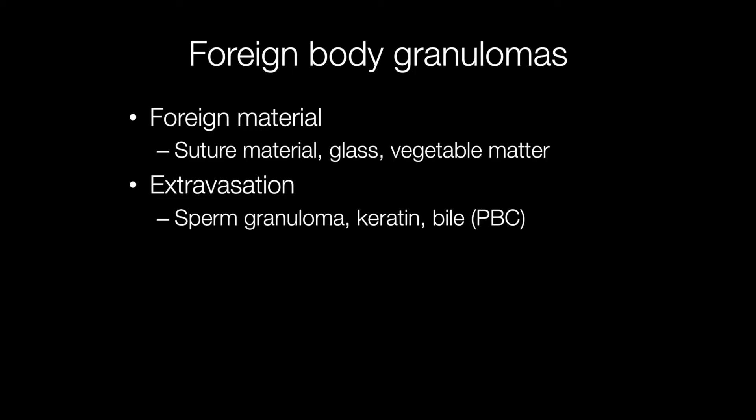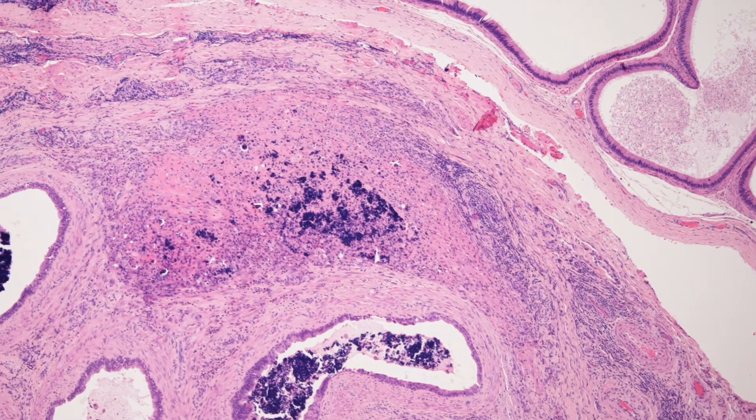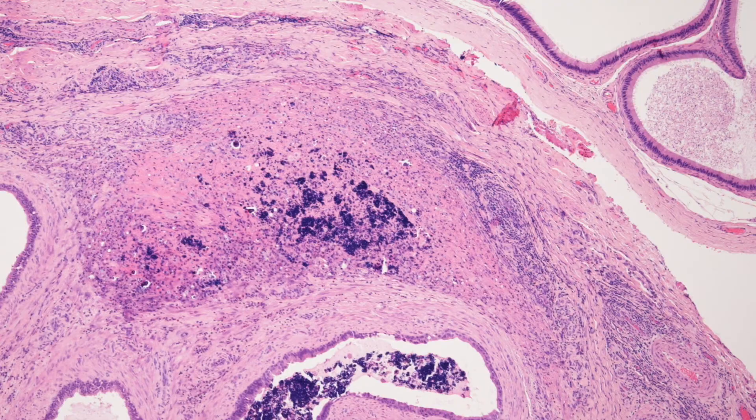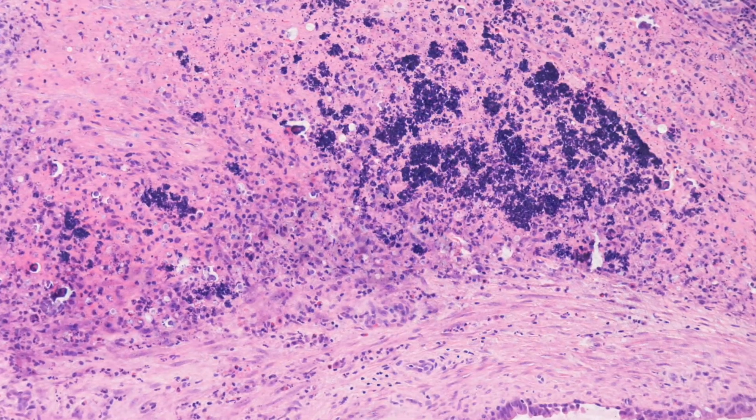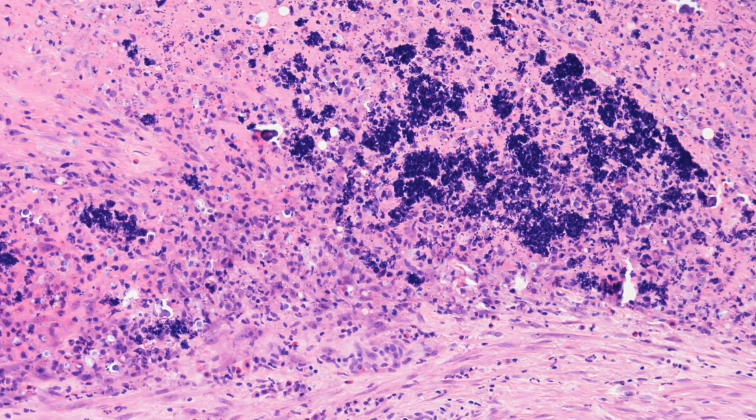Another group is from substances that are not strictly foreign but where they have leaked into areas where they shouldn't be. For example, a sperm granuloma following a vasectomy operation, keratin from a ruptured epidermoid cyst, or bile in primary biliary cirrhosis where the bile duct has ruptured causing bile to extravasate into the portal tract. In this picture, the purple area that we are zooming into is extravasated sperm resulting in a granulomatous response causing a sperm granuloma.